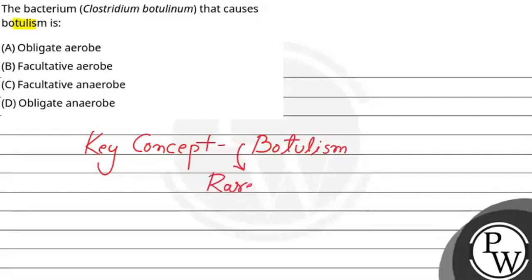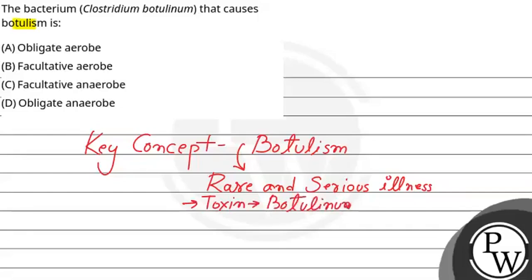So what is botulism? It is a rare and serious illness caused by Clostridium botulinum. This bacteria will release a toxin called botulinum. That toxin is responsible for blockage of our nervous system — it will attack our nervous system. And it will lead to difficulty in breathing and muscle paralysis. So these are the major issues.